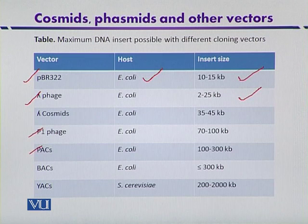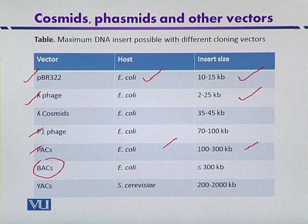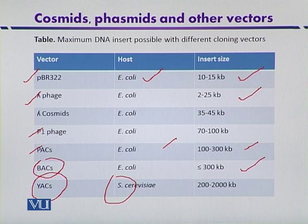The P1-type packaging system uses E. coli as the host organism and can clone up to 300 kilobase DNA fragments. Bacterial artificial chromosomes can also clone up to 300 kilobase. For larger DNA fragments, yeast artificial chromosomes are used, with Saccharomyces cerevisiae as the host organism, and they can clone between 200 to 2000 kilobase DNA fragments.